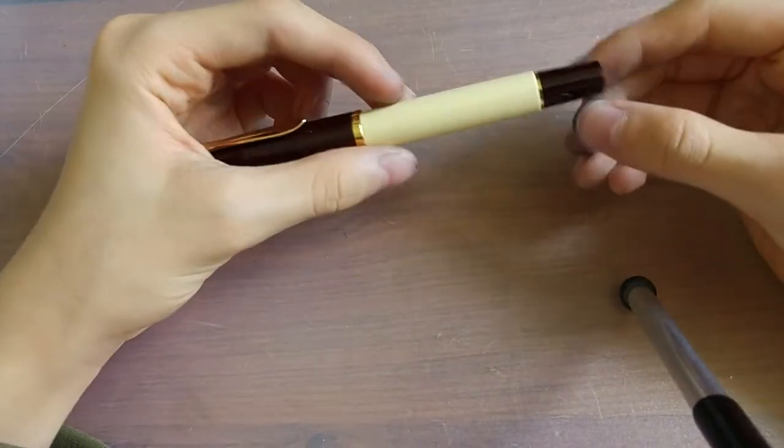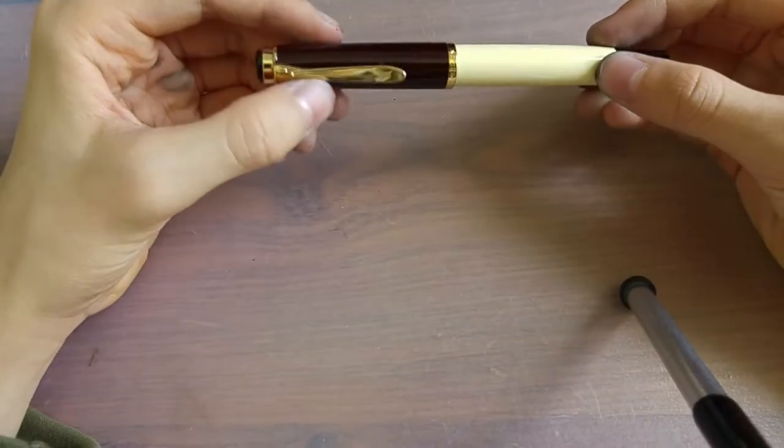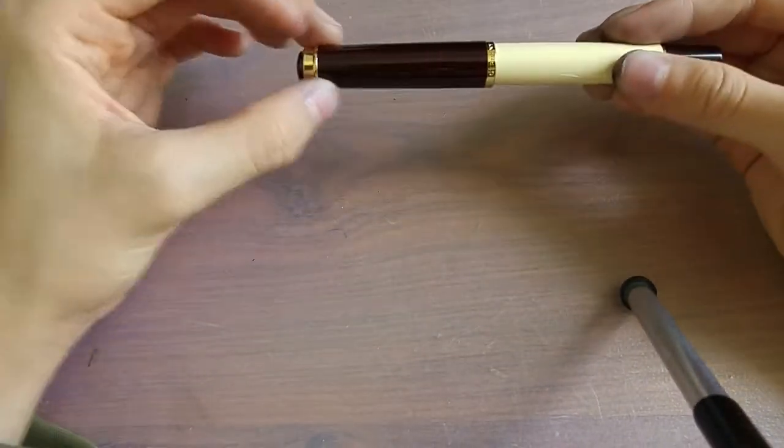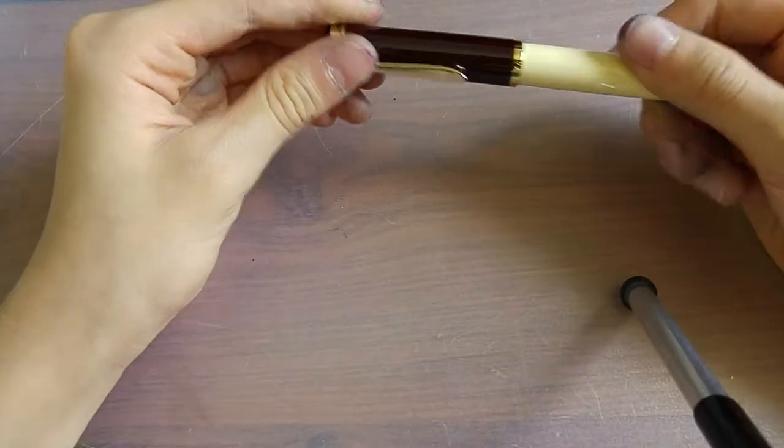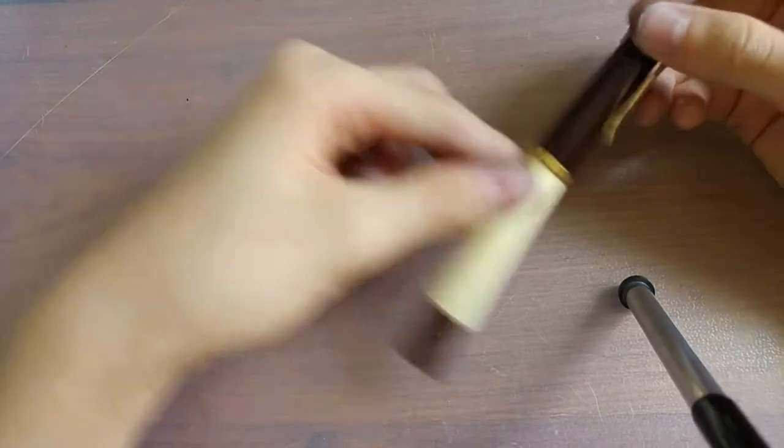This is a piston fill pen, so this is the piston knob. The cap is a screw type cap. The length of this pen capped is about 124 to 125 millimeters, which is a pretty short pen.